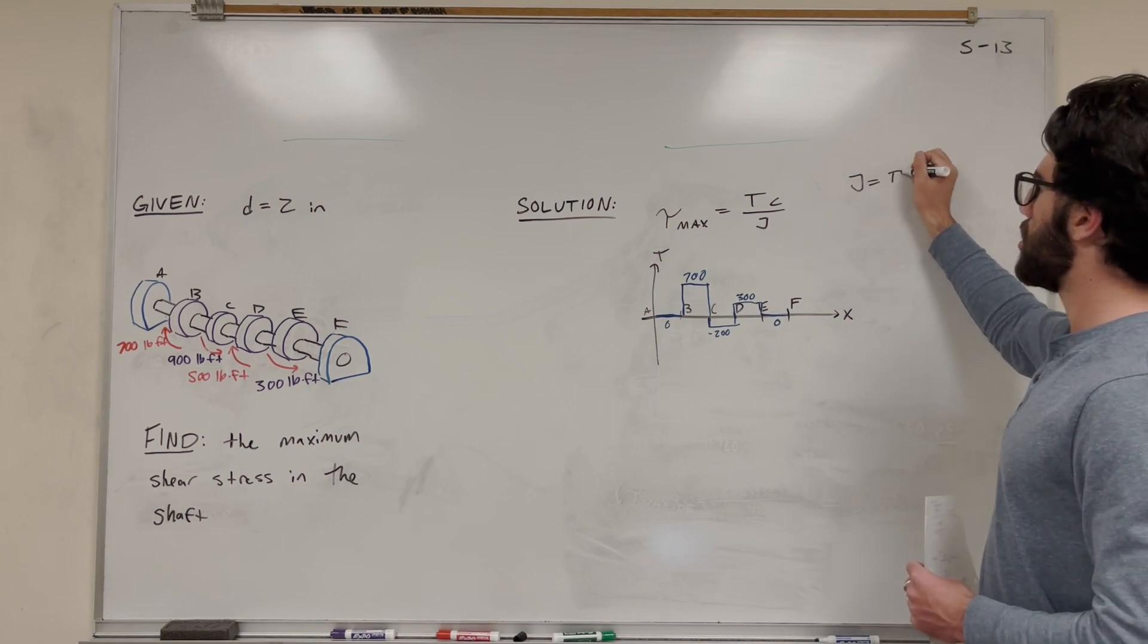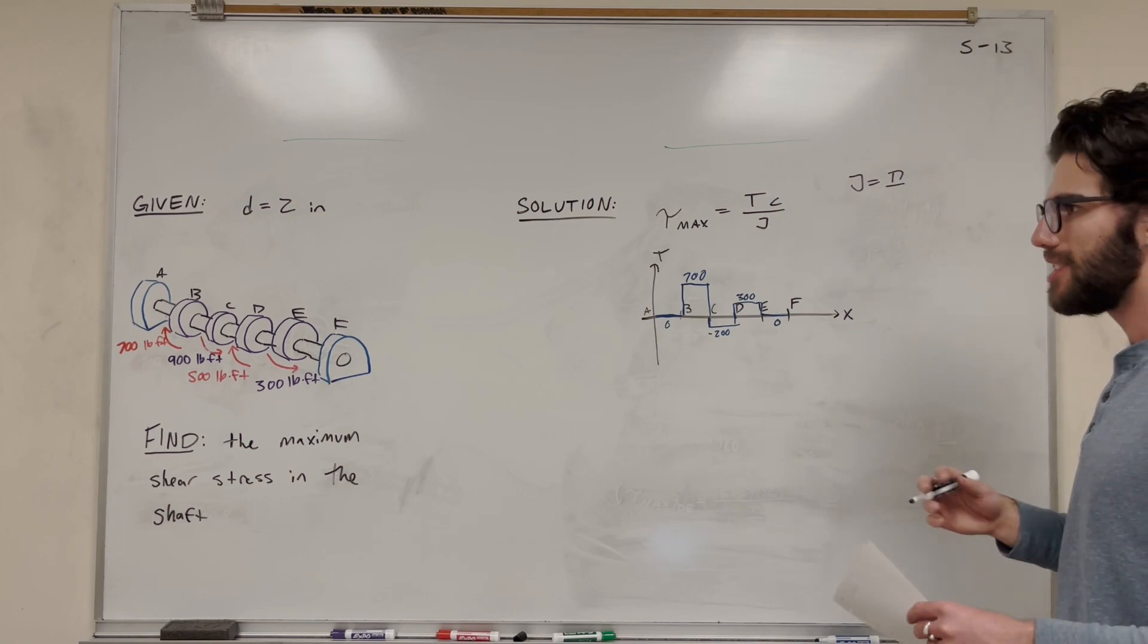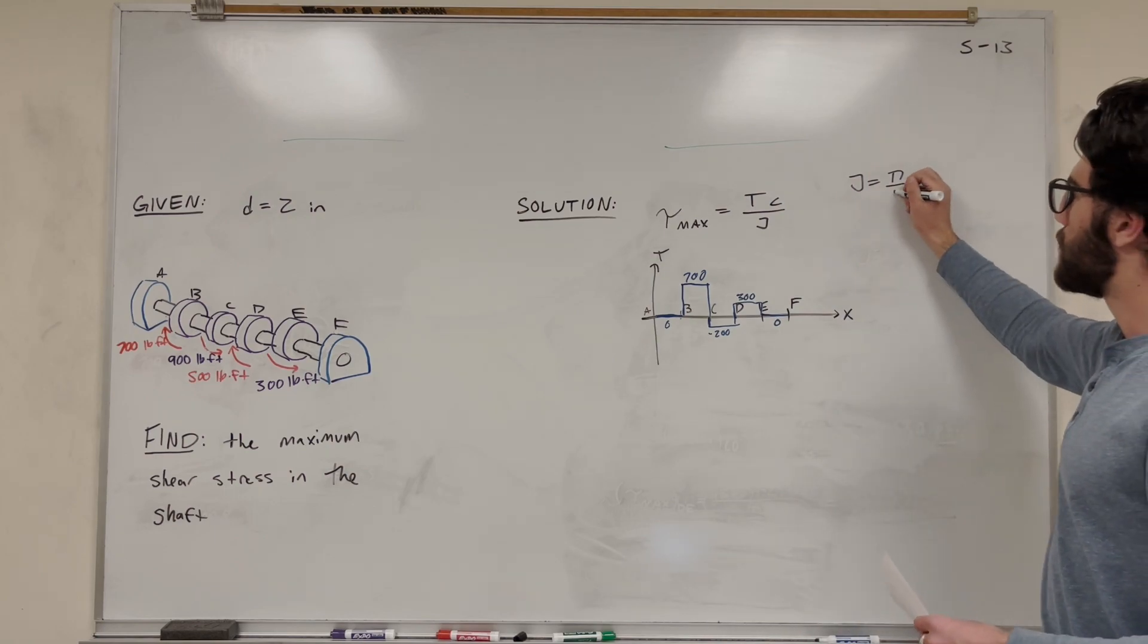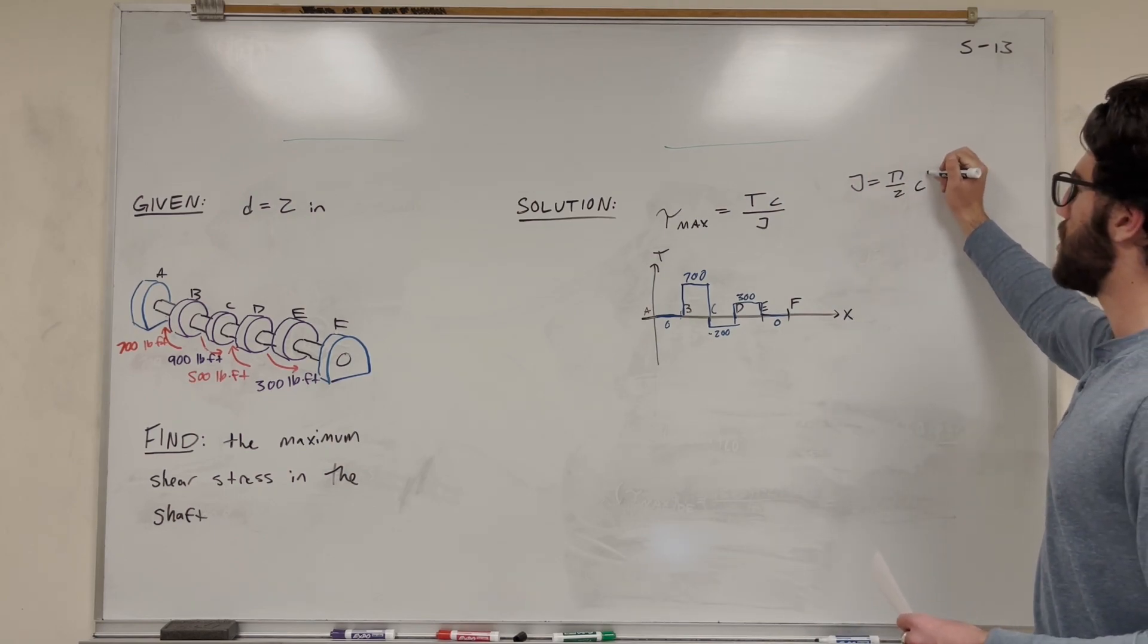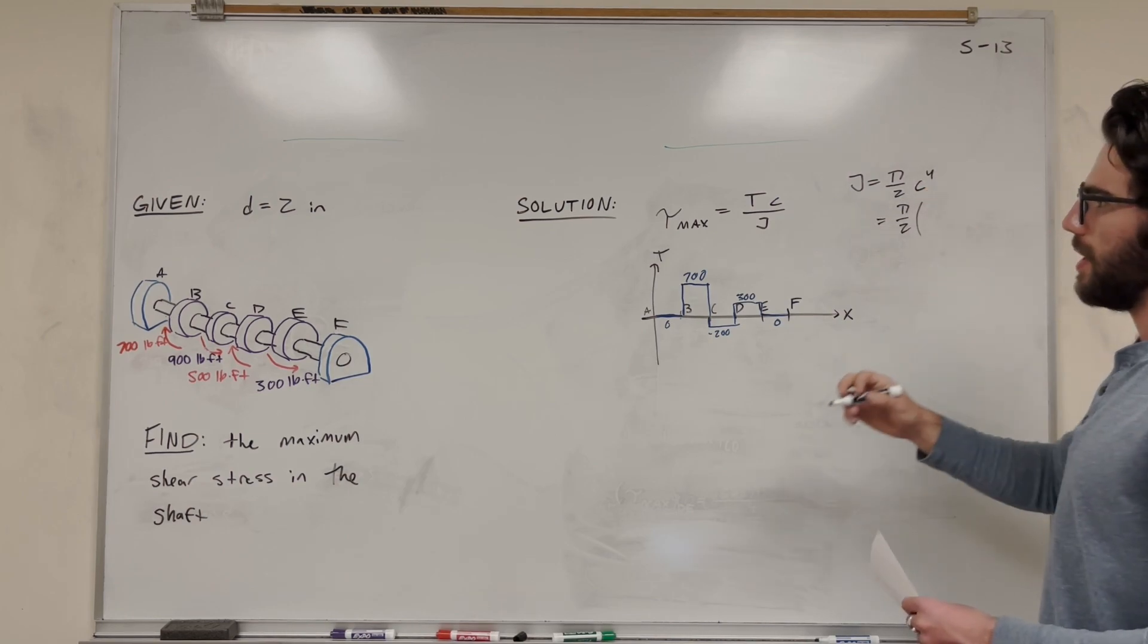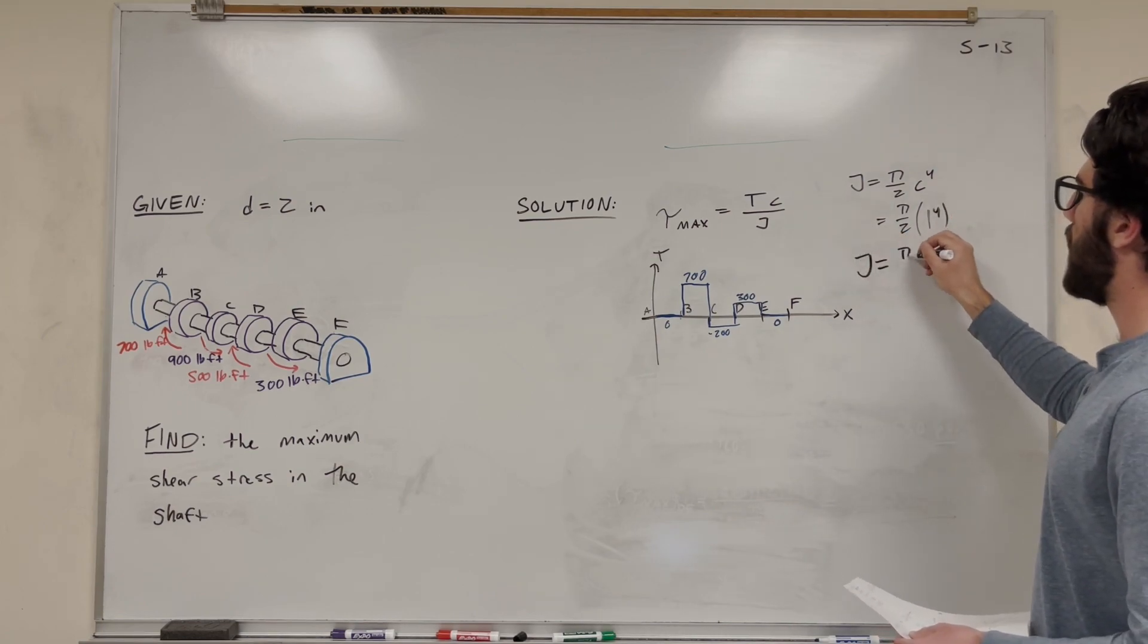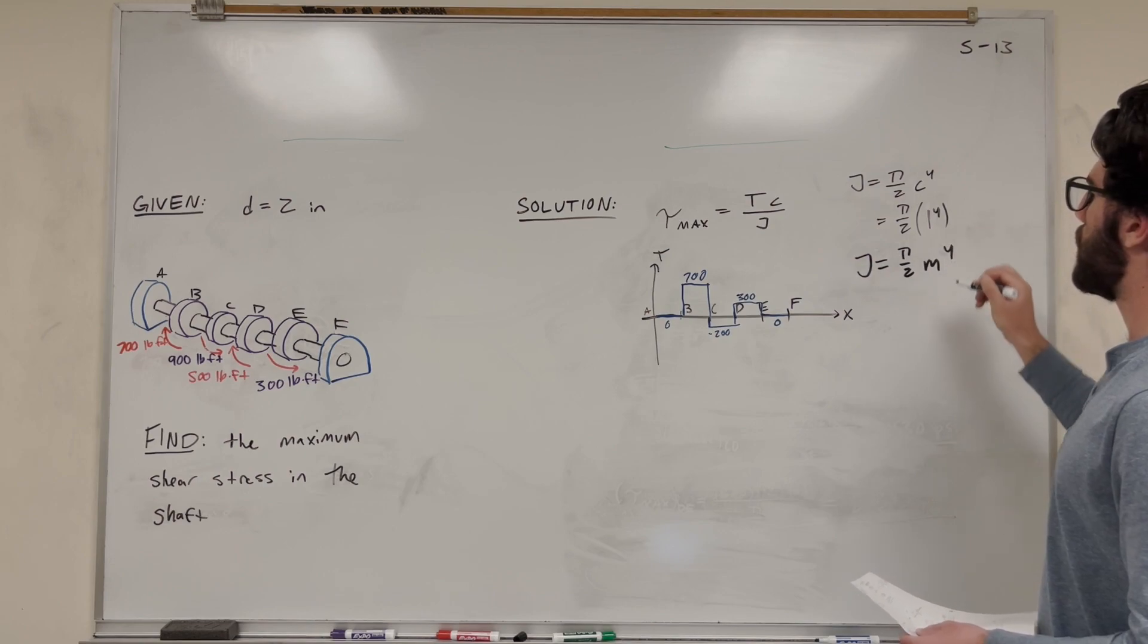The polar moment of inertia for a shaft is pi over 2, radius to the fourth. So we plug in a number for radius. We know that our radius is half the diameter, 1 inch, to the fourth. So we're going to get that J is equal to pi over 2 inches to the fourth.